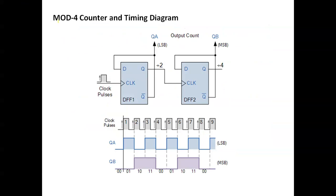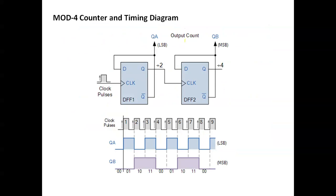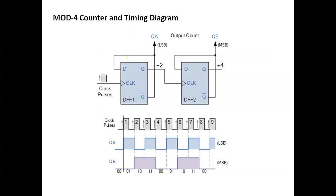For a mod 4 counter and its timing diagram: mod 4 uses the formula 2^2 = 4. We can build mod 3 and mod 4 counters using these devices. There are two flip-flops, so n = 2, and 2^2 = 4. We are using D flip-flops — two D flip-flops — because D flip-flops are suitable for counters. The clock is applied; it is a synchronous counter.